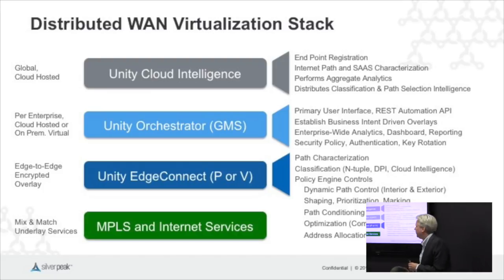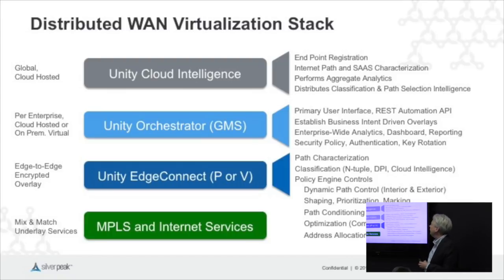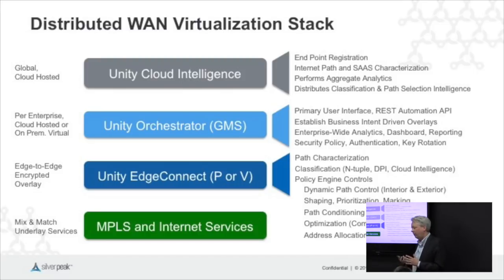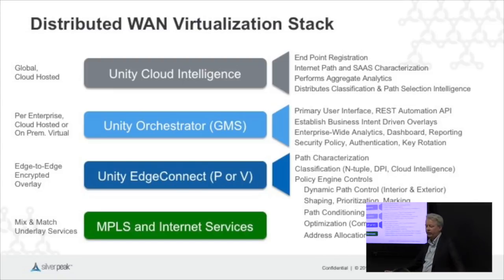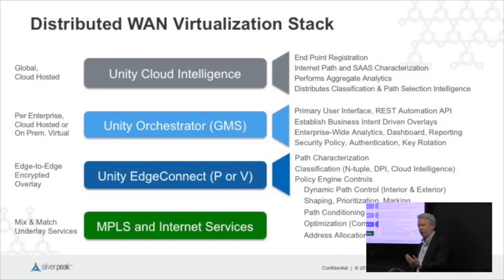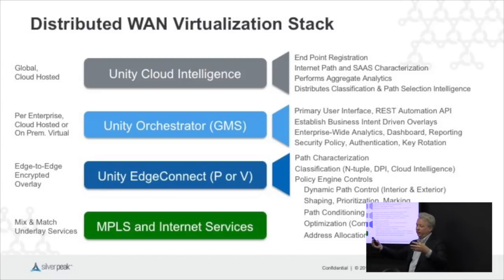The cloud intelligence layer supports endpoint registration, which is important for zero-touch provisioning. It's also where we do internet path and SaaS characterization — we distribute information to all of our customers about reachability to well-known SaaS services and the state of the internet. One thing we do uniquely at Silver Peak is optimize which gateway a customer goes through when leaving their network to reach a particular SaaS or IaaS service.